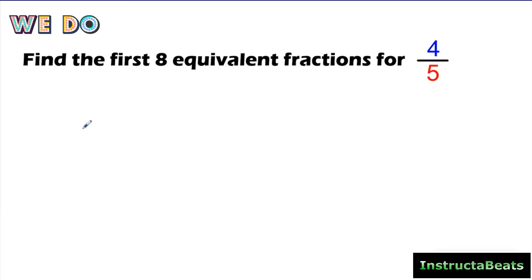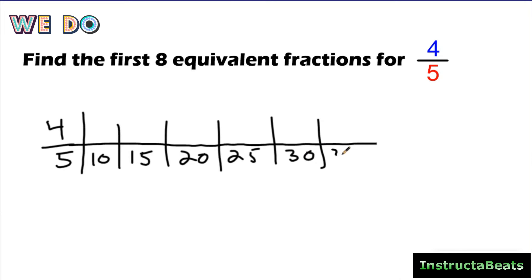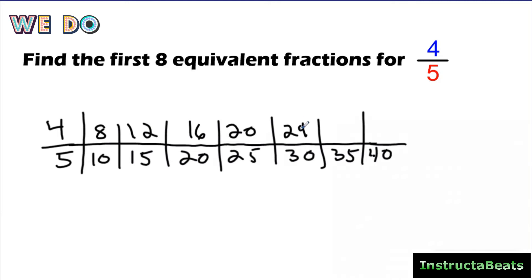Let's do four-fifths together now. So I'm going to do four-fifths right here, and again I just want to make a list of eight equivalent fractions. I draw my line — the line just helps me separate my equivalent fractions, it's kind of like the equal sign. It doesn't matter if you start with numerator or denominator; I always start with my denominator. My denominator is five, so I skip count by five: ten, fifteen, twenty, twenty-five, thirty, thirty-five, forty. So I just have eight denominators down here. Now I skip count by my numerator four: four, eight, twelve, sixteen, twenty, twenty-four, twenty-eight, thirty-two. So four-fifths is equivalent to all of these fractions.